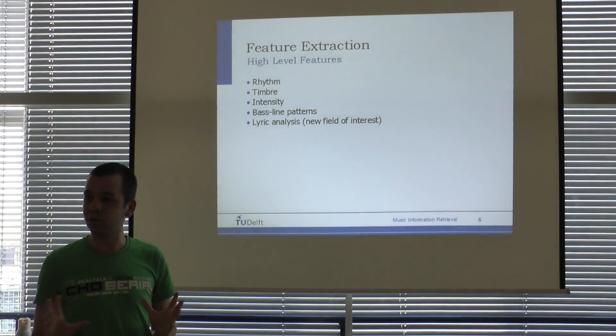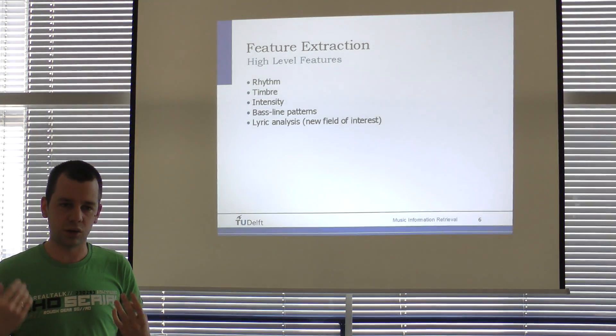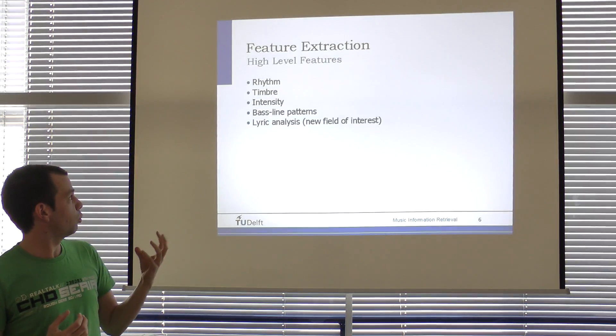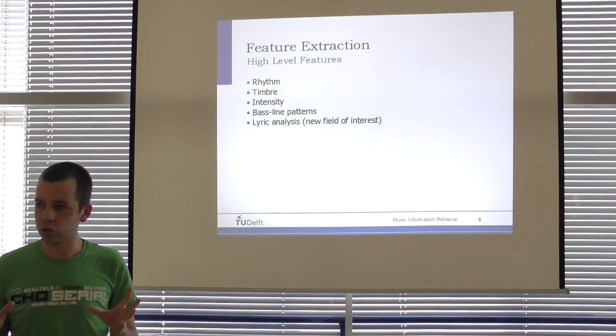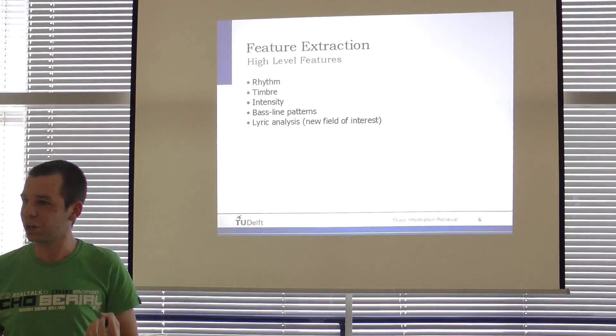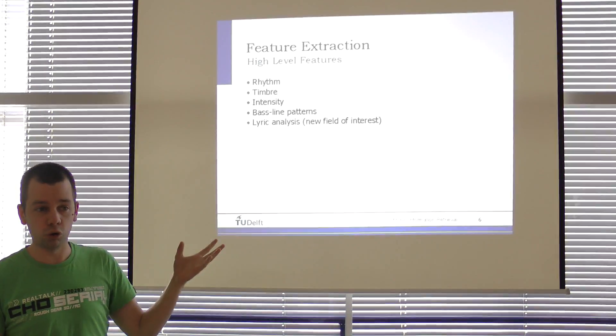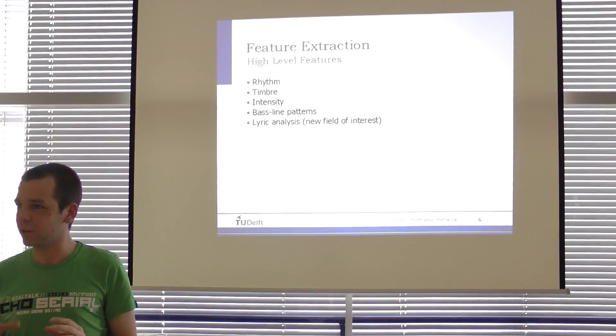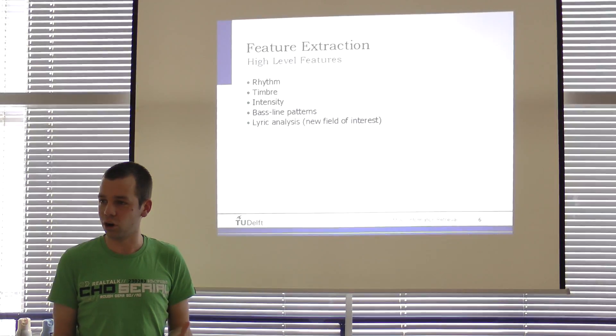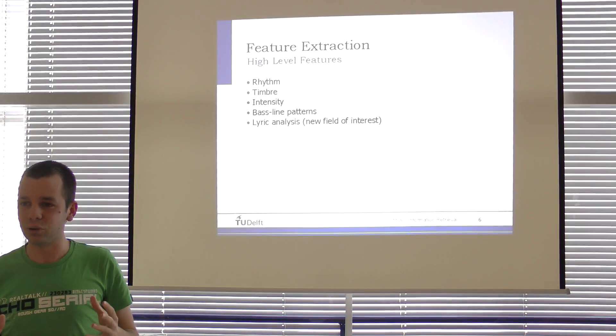What about the high-level features? There are actually three features that are extracted in music and used in all algorithms for classifying mood: rhythm, timbre, and intensity. Somehow there seems to be a block—why can't we go further and find more features than these three? There's the bass line that says something about mood as well, but then we need a piece of music that has a bass line to start with.